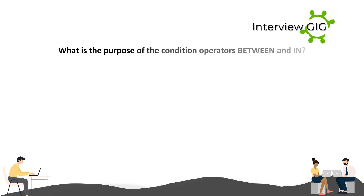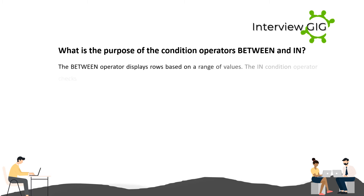What is the purpose of the condition operators BETWEEN and IN? The BETWEEN operator displays rows based on a range of values. The IN condition operator checks for values contained in a specific set of values.